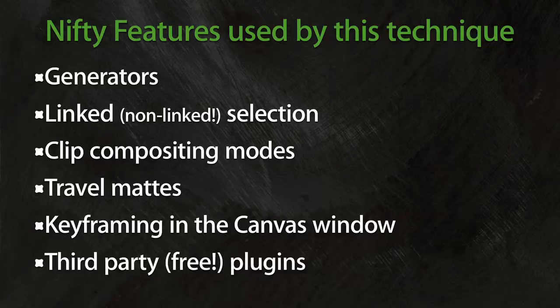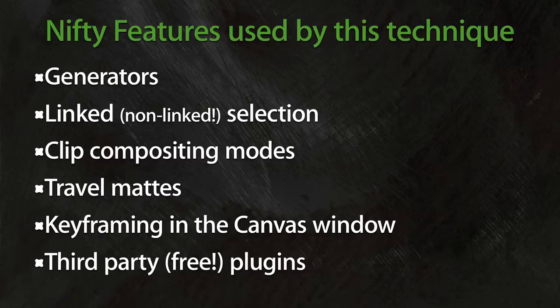First and foremost, we're going to be using some generators when we do this technique. In particular, we're going to be generating an oval, which will become a traveling mat. We'll also talk about linked selections and non-linked selections. We get to use clip compositing modes on the timeline, and we'll get to use a traveling mat. A traveling mat lets you move the effect around the screen and have it affect only certain portions of the screen, and you can even animate that effect.